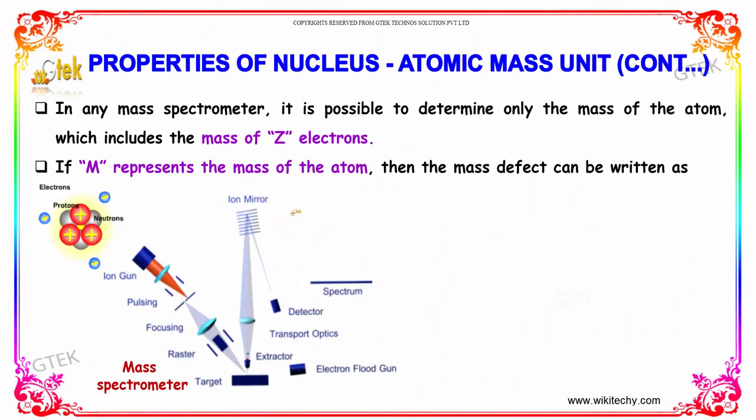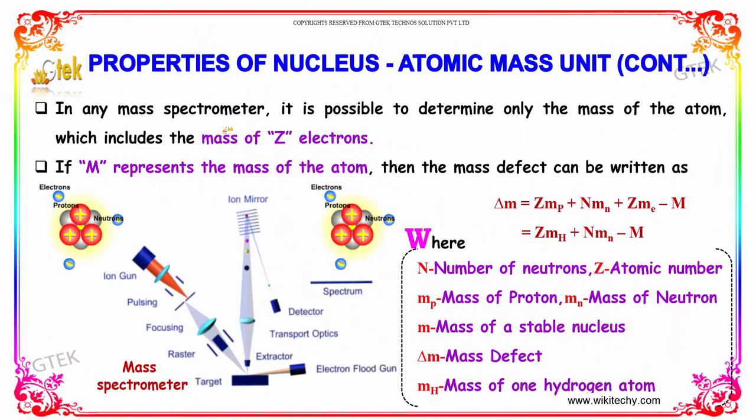In any mass spectrometer, it is possible to determine only the mass of the atom, which includes the mass of the electrons. If M represents the mass of the atom, then the mass defect can be written as delta m is equal to z into mp, atomic number into proton, neutron number into the mass of neutron, and the atomic number into mass of electron minus m.